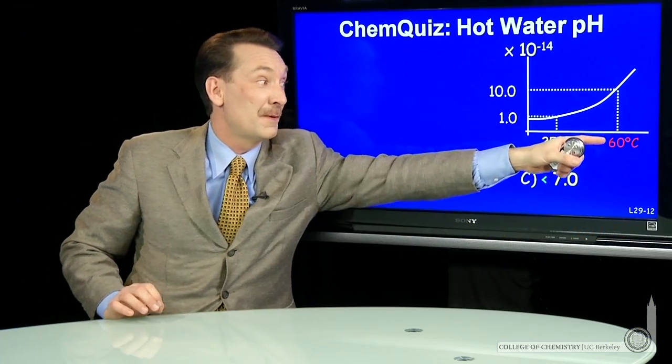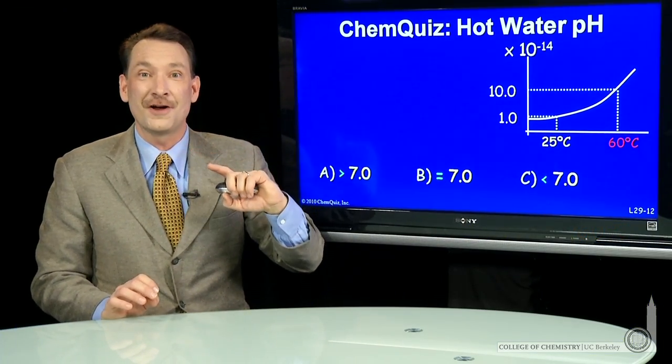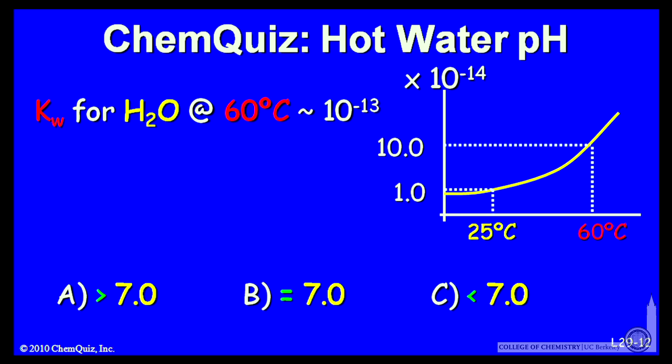So by the time I'm up to 60 degrees, Kw is 10 times as large. So if Kw is 10 times as large, that's 10 to the 13th rather than 10 to the 14th.